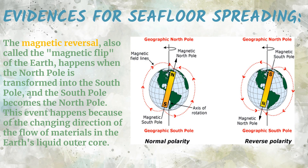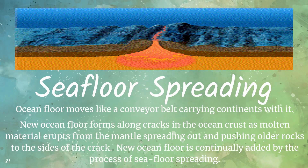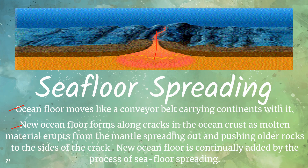Magnetic reversal, also called the magnetic flip, is the reversal of the polarity of the Earth — where the North Pole transforms into the South Pole and vice versa. This happens because of changing directions in the flow of materials in Earth's liquid outer core. Key concepts of seafloor spreading: the ocean floor acts like a conveyor belt, carrying the continents with it; new ocean floor forms along cracks in the mid-ocean ridge as molten materials erupt from the mantle and push rocks to the sides; and new ocean floor is continuously added by this process.